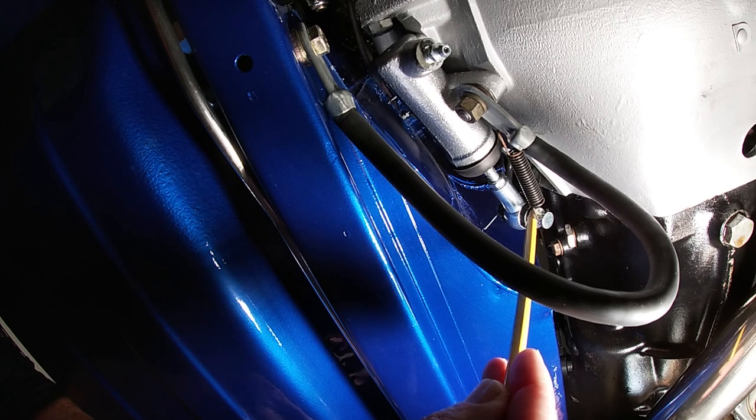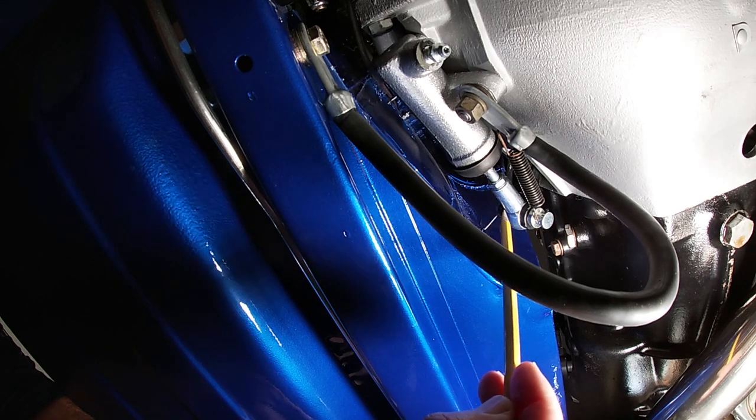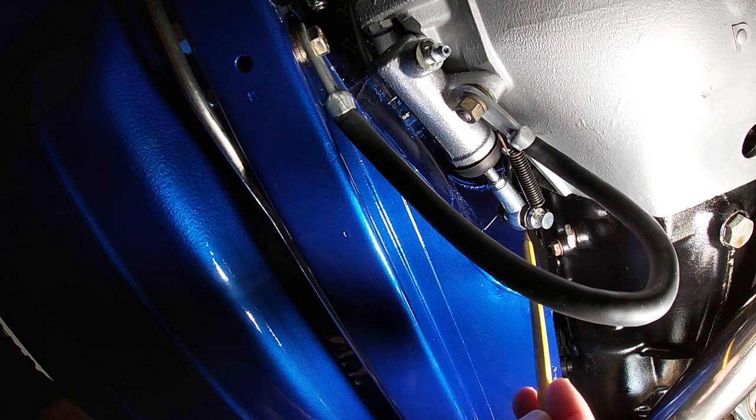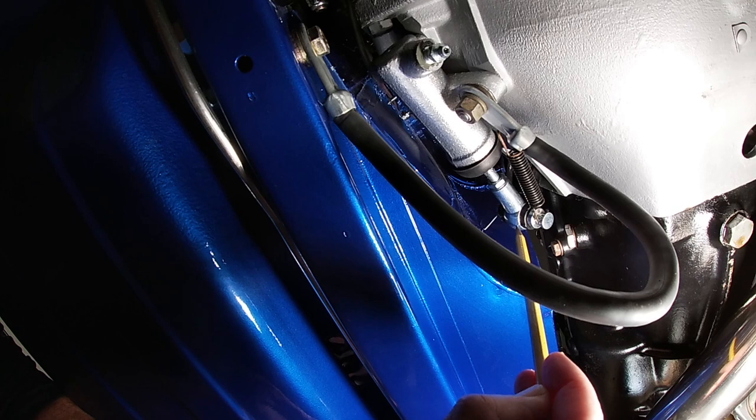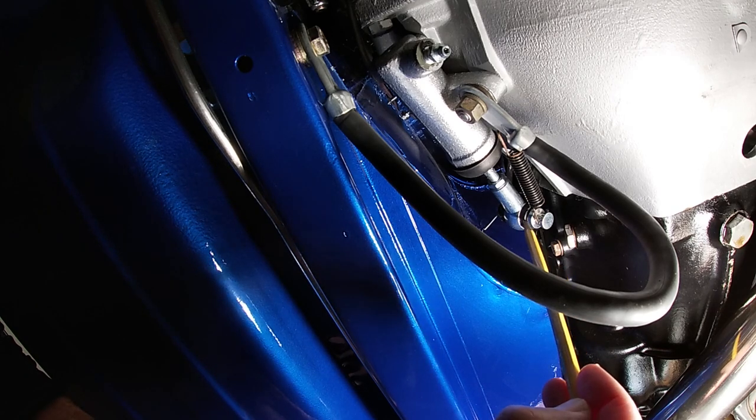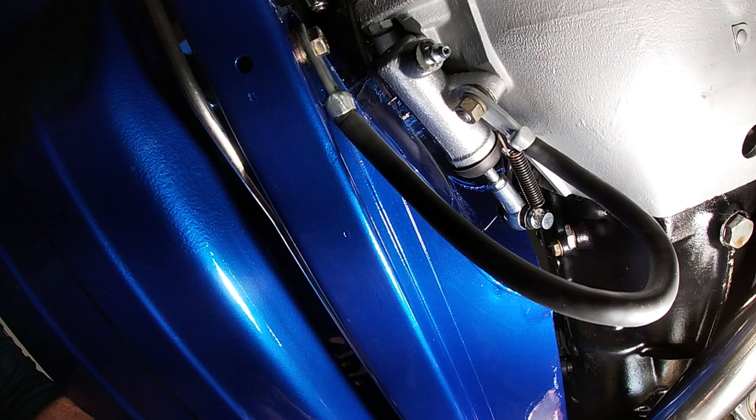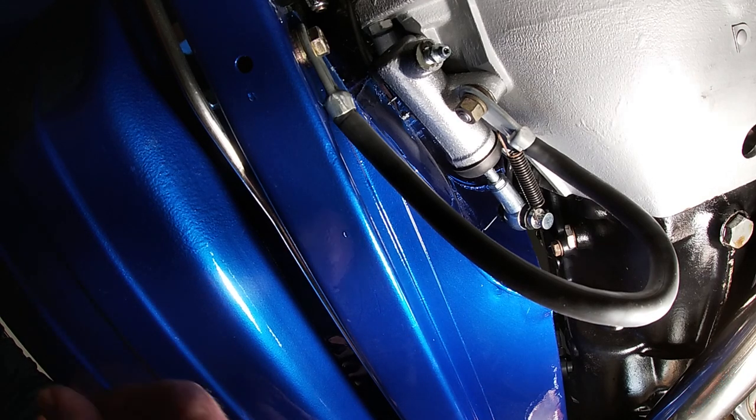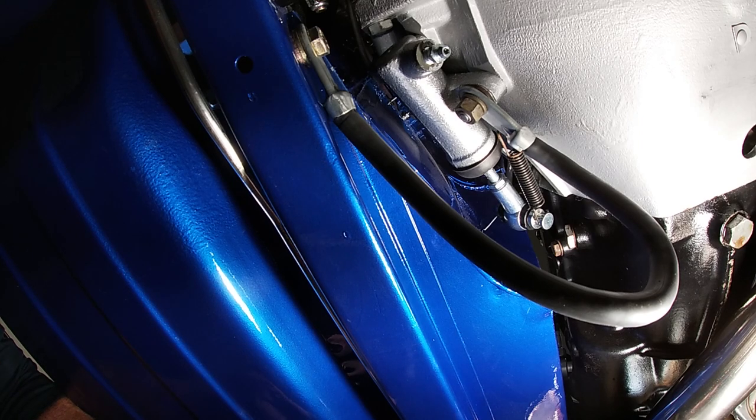So the clutch master cylinder, when you depress the pedal, pushes the yoke arm, pushes the adjustable rod this way. Obviously it pushes the yoke arm that way. That pushes the thrust bearing onto the clutch plate until the clutch plate relieves pressure against the flywheel, and so you're looking for disengagement obviously.